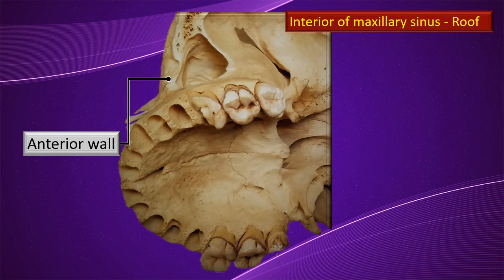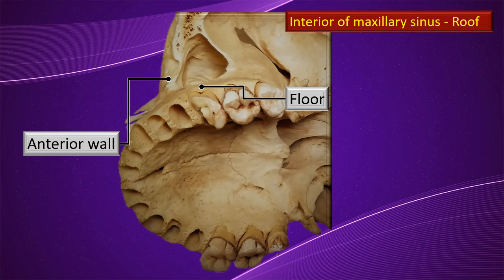Looking at the interior of the maxillary sinus: the camera is focused from below upwards, clearly showing the roof — the orbital plate of the maxilla. The floor is just above the alveolar sockets. Since the camera is shot from below upwards, what you see at the top of the frame is the roof.